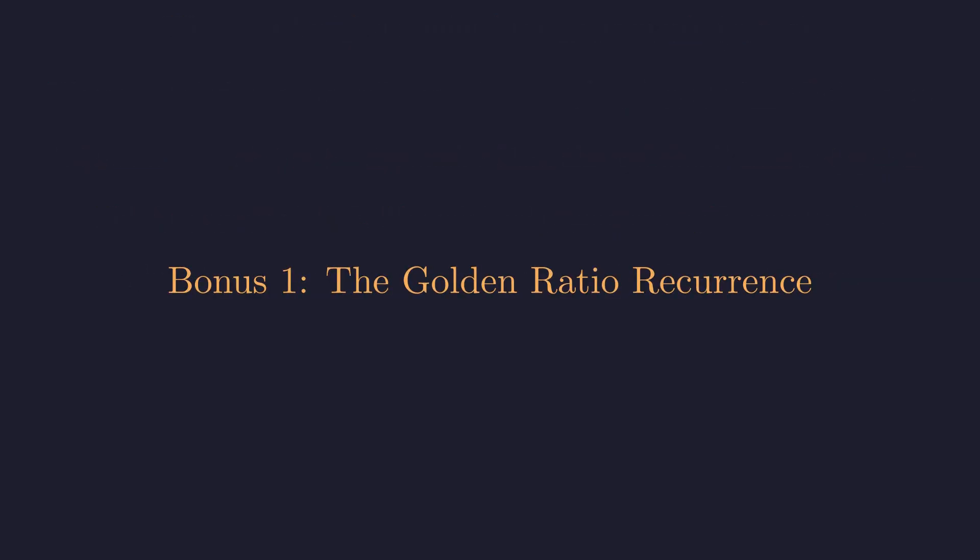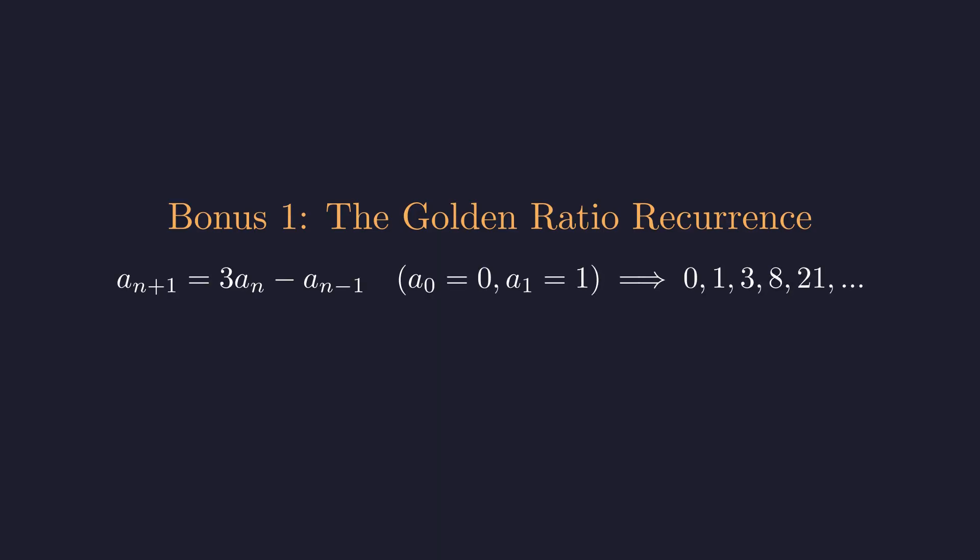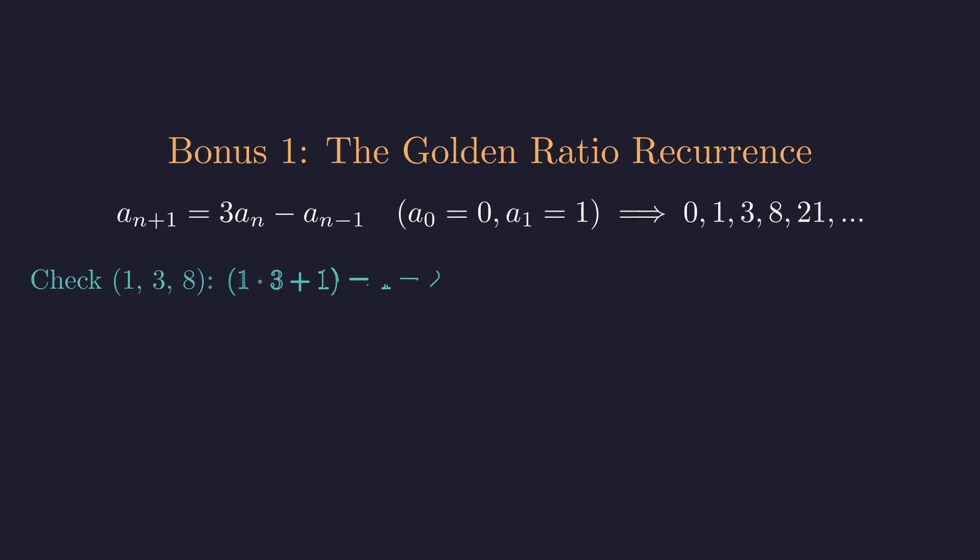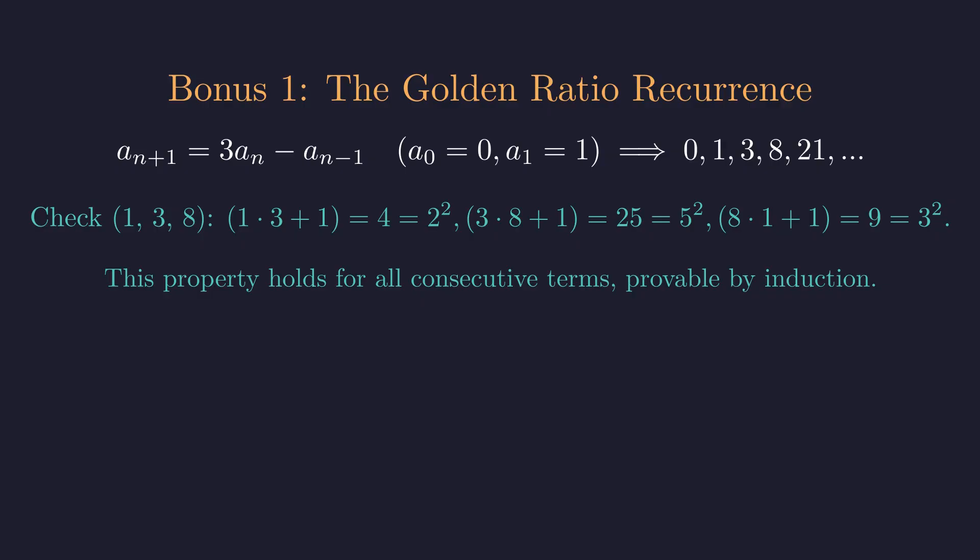Before we wrap up, I want to show you something really beautiful. There's this elegant family of solutions that emerges from a simple recurrence relation. This recurrence relation might look familiar if you know about Fibonacci numbers, but with a twist. When you take any three consecutive terms, something magical happens. They always satisfy Kedlia's theorem. Let's verify this with the triple one, three, eight. One times three plus one gives us four, which is two squared. Three times eight plus one gives us 25, which is five squared. And eight times one plus one gives us nine, which is three squared. Perfect squares across the board. And this isn't just a coincidence. This property holds for every single triple of consecutive terms in the sequence. You can prove this with mathematical induction, but even just seeing the pattern is pretty amazing.